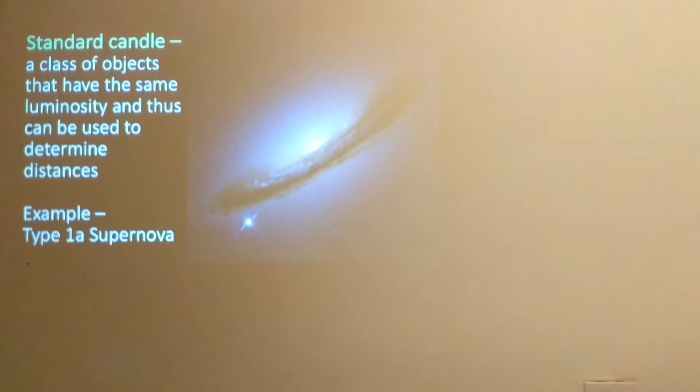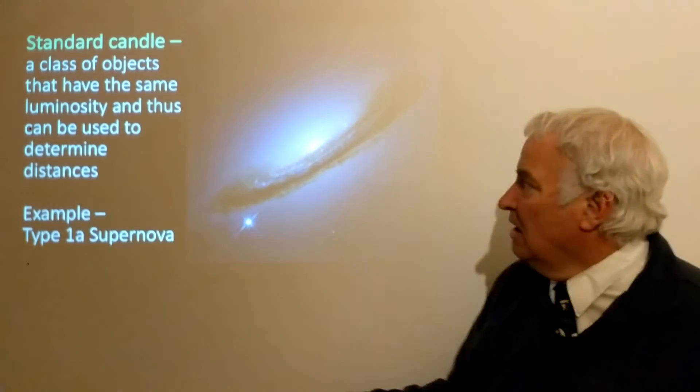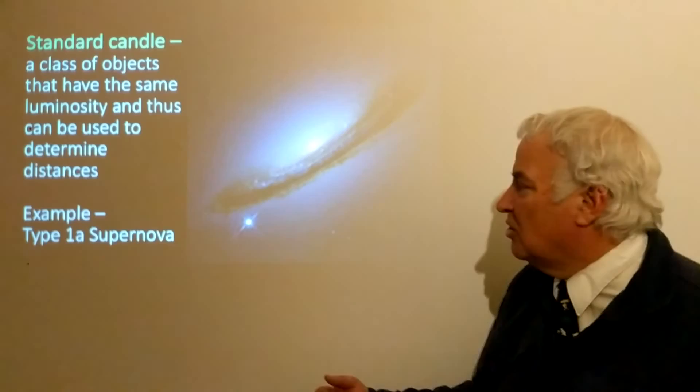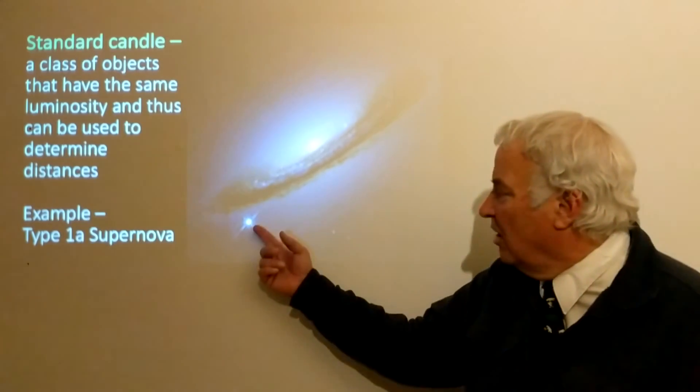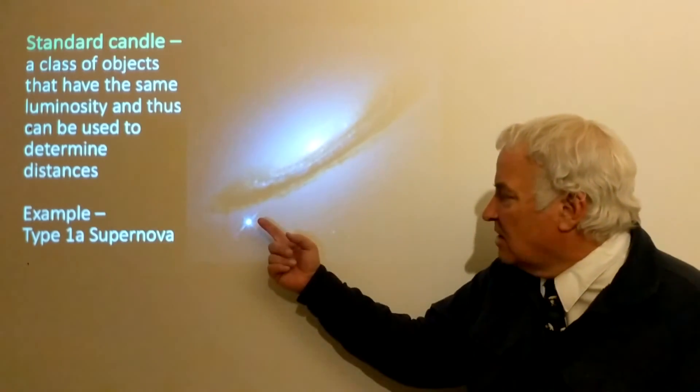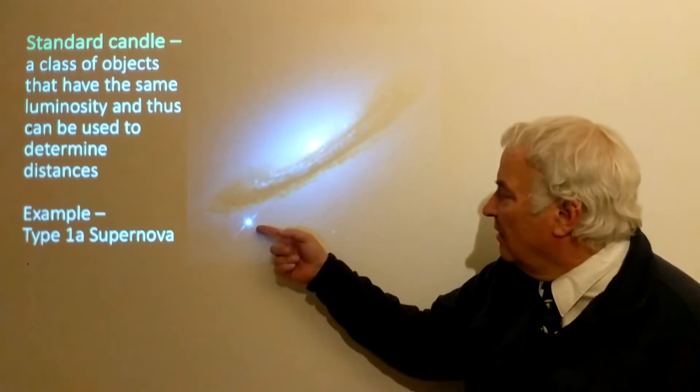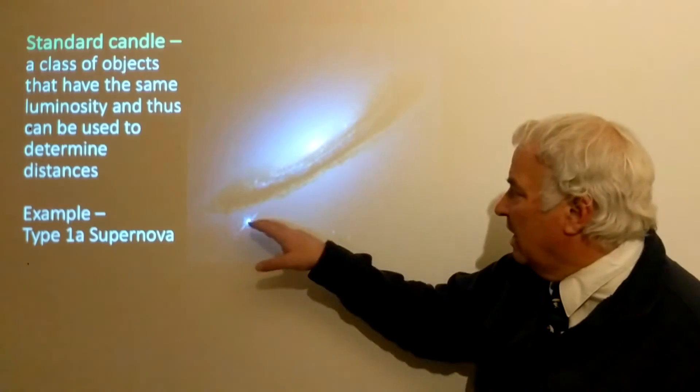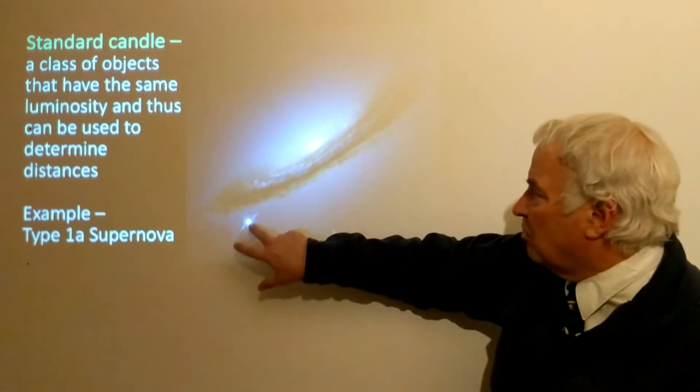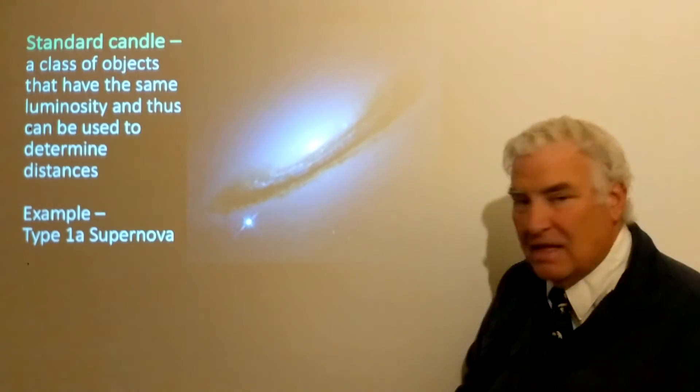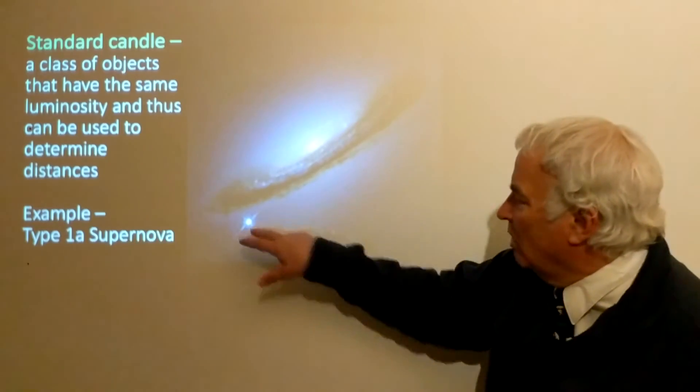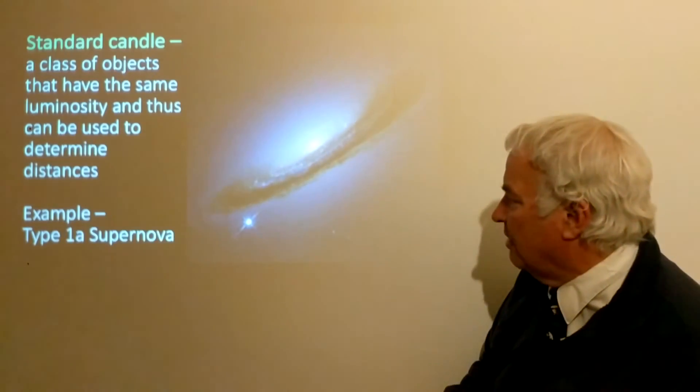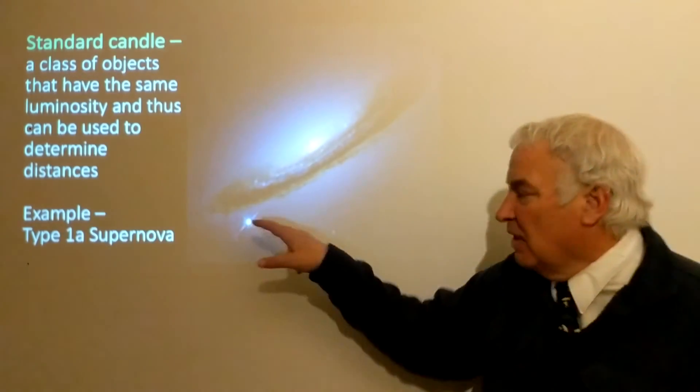Standard candles, another method. This is where you have some class of objects that have the same luminosity and thus they can be used to determine distance. An example is this type 1a supernova exploding in the outskirts of this galaxy. You can see that this is as bright as the nucleus of that same galaxy but it's only one star and this is billions of stars.